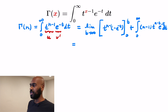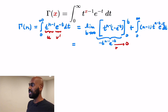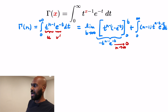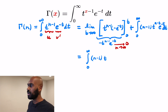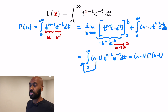Let's evaluate this. The first piece is t to the n minus 1 times negative e to the negative t. When we plug in 0, it vanishes. Then we're left with negative b to the n minus 1 times e to the negative b, and that goes to 0 as b goes to infinity because e to the negative b dominates b to the n — putting it in the denominator makes it go to 0. So we're left just with the integral from 0 to infinity of n minus 1 times t to the n minus 2 times e to the negative t dt.